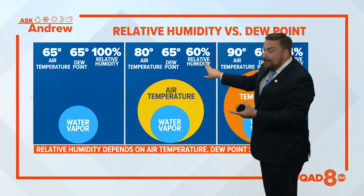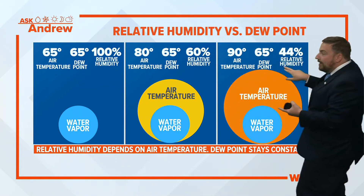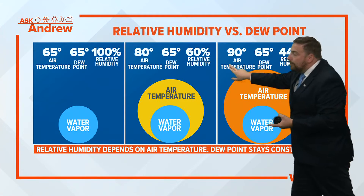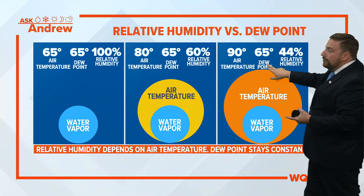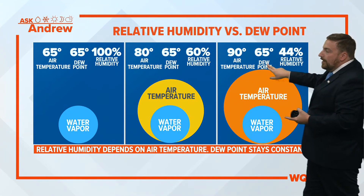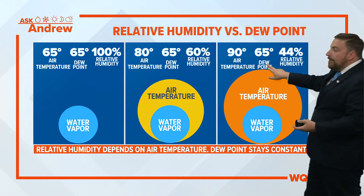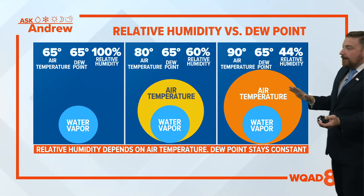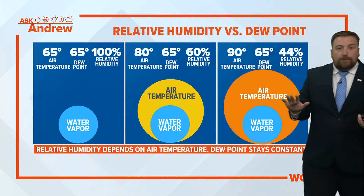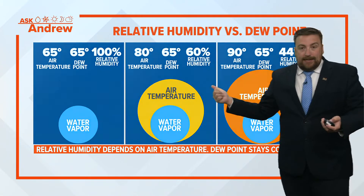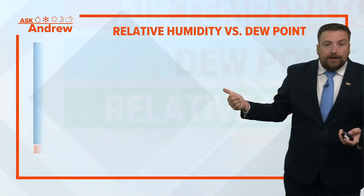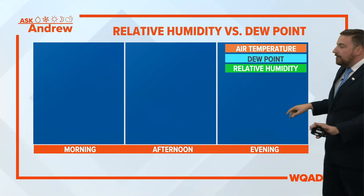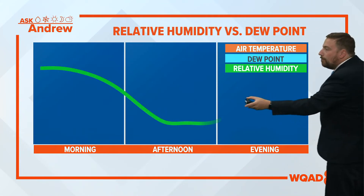However, you start to separate them — say, for example, an 80-degree air temperature but a 65-degree dew point — that drops it to 60% relative humidity. And you can see it gets even lower as the temperature goes higher and the dew point stays the same. So relative humidity all depends on the temperature of the air as the dew point stays constant.